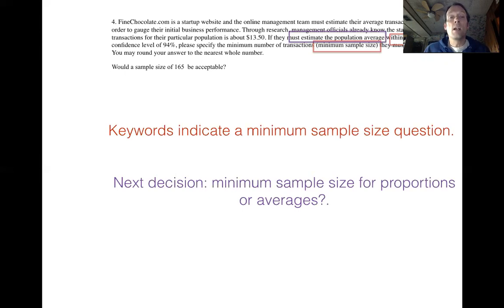Well, in the wording, they mentioned that they want us to estimate a population average. So we're going to end up running the formula minimum sample size for a population average. And remember that when they give you within, the word within is used to give you your error for the formula. Let's look at question number five.